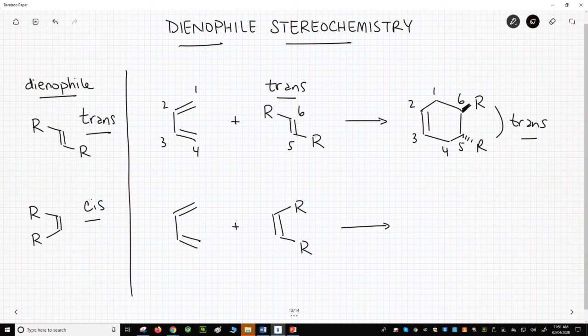Remember that the Diels-Alder does not have any intermediates. It's just one step, and there's no opportunity for stereochemistry to be changed during the reaction. If the cis dienophile did the cycloaddition, then the two R groups would be cis on the ring in the product.